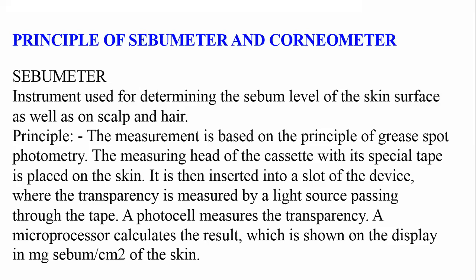The measuring head of the cassette with its specific tape is placed on the skin to collect the sample of sebum. After that, this cassette is inserted into the device, and it will measure the amount of sebum. The principle is similar to a spectrophotometer — the instrument measures the content on the basis of the intensity of light passing through the sample. After placing the cassette inside the instrument, a beam of light passes through the tape in the cassette, and the photocell measures the transparency. A microprocessor calculates the result and displays the content of sebum in milligrams per centimeter square of skin.